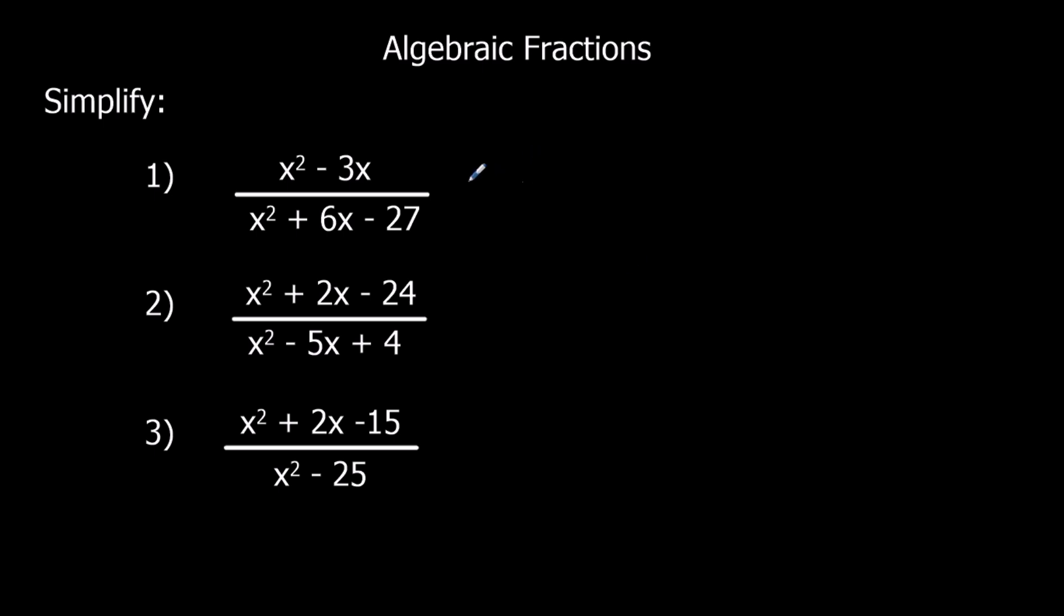Okay, first one. Factorize the top, which is x and x minus 3. We know it's going to be x minus 3 on the bottom, but it's 3 times 9. So it's plus 9 minus 3, which gets us to 6 and multiplies to make the minus 27. Those ones cancel. x over x plus 9.